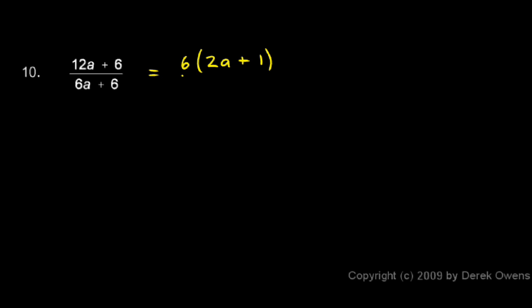So the numerator is factored. And then on the bottom, each of these clearly has a 6 in it, so I can bring the 6 out, and that leaves me with a plus 1. And the 6s cancel.